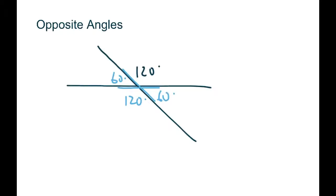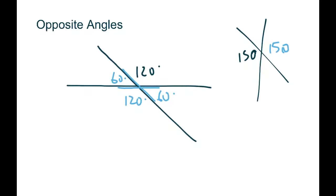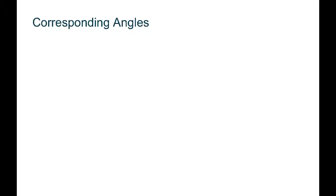If I give you a question where two lines cross and this angle is 150 degrees, you only need to know one angle to figure out all the others. The opposite angle has to be 150 because opposite angles are the same. The other two, using supplementary ideas, have to add up to 180 and are also equal to each other. The key things to remember: opposite angles are equal, and supplementary angles add up to 180.